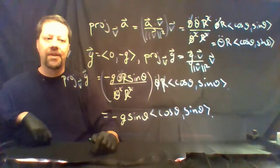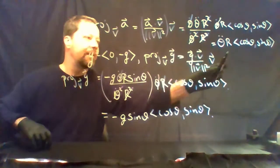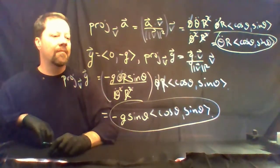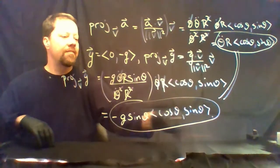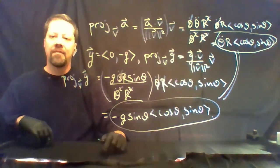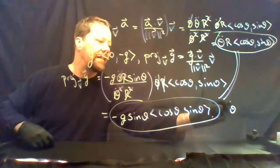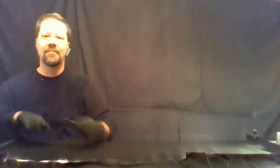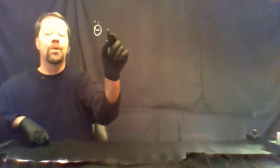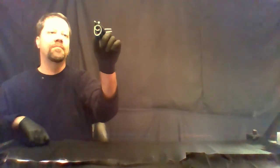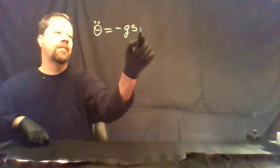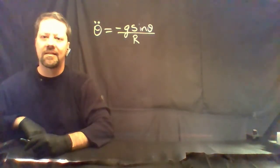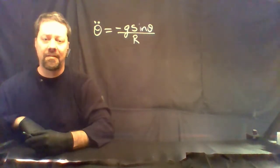The two methods of calculating the acceleration have to be equal. So we deduce that theta-dot-dot r must equal -g sine theta. After all this work, we get the second-order nonlinear equation: theta-dot-dot equals -g sine theta divided by r, where g is the constant acceleration due to gravity and r is the constant length of the pendulum.